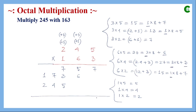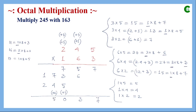Now we add the three partial products. First position: 7 only. Next: 6 + 5 = 11, represented as 1 × 8 + 3, so we write 3 and carry 1. Then: 7 + 3 + 5 + carry 1 = 16, represented as 2 × 8 + 0, so we write 0 and carry 2. Then: 7 + 4 + carry 2 = 13, represented as 1 × 8 + 5, so sum is 5 and carry 1. Finally: 2 + 1 + 1 = 4.